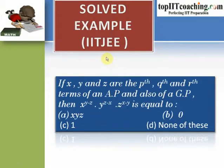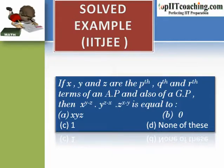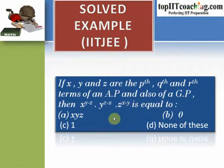Now let's solve an IIT problem based on this formula. If X, Y and Z are the Pth, Qth and Rth terms of both an AP and a GP, then find the value of X to the power of (Y minus Z) times Y to the power of (Z minus X) times Z to the power of (X minus Y). The options are: (A) XYZ, (B) 0, (C) 1, (D) none of these.